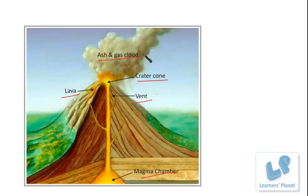When pressure builds up, eruptions occur. Gases and rock shoot up through the opening and spill over or fill the air with lava fragments. Eruptions can cause lateral blasts, lava flows, hot ash flows, mudslides, avalanches, falling ash and floods.